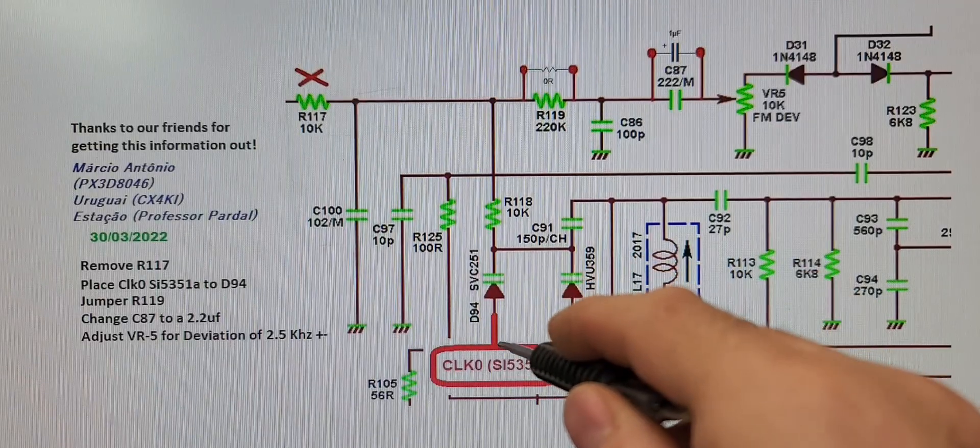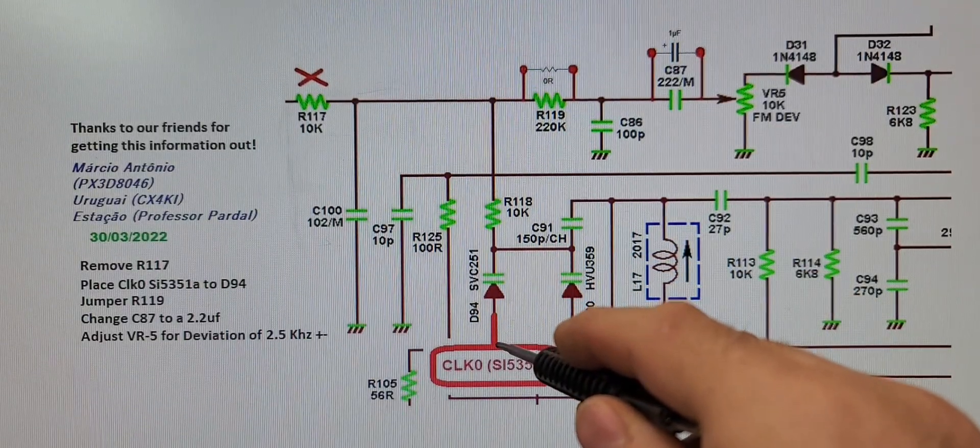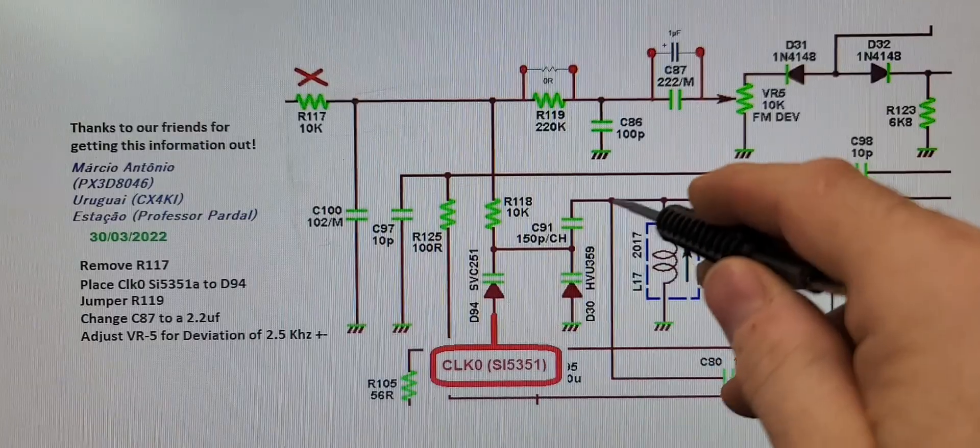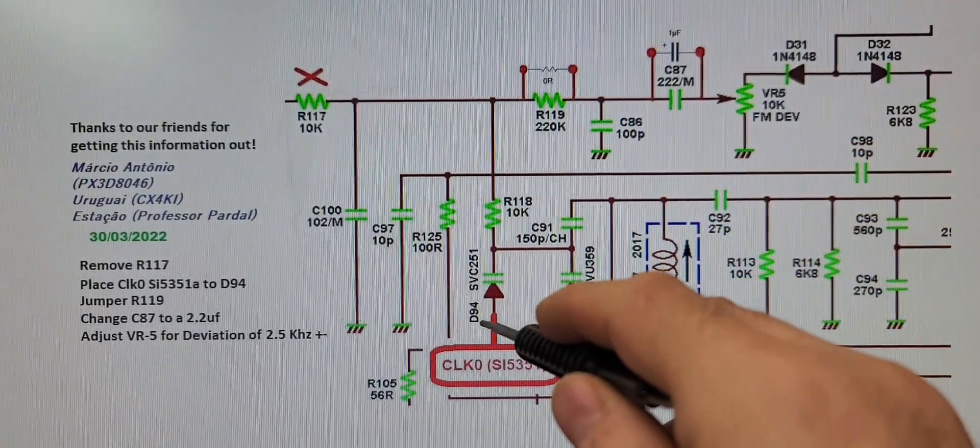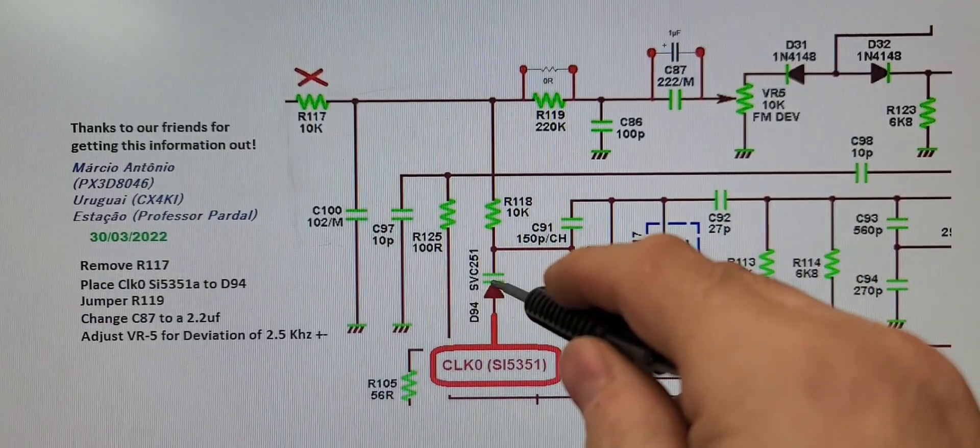So what we're going to do is we're going to take your clock zero from the SI generator, and we generally just tie it right to here. But we're going to go back here and tie it to D94, or this diode here of this pair.